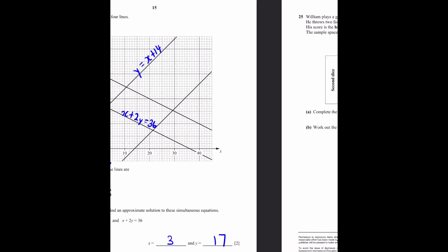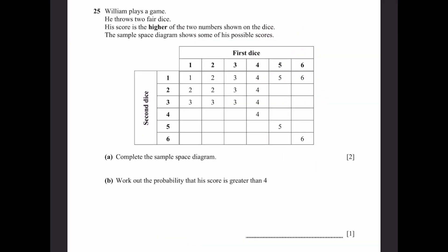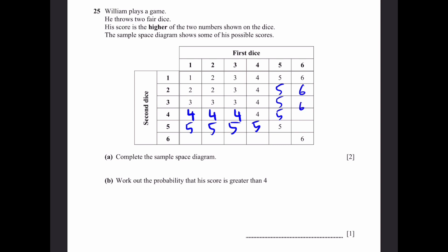Question 25. William plays a game — he throws two fair dice and his score is the higher of the two numbers shown. The sample space diagram shows some possible scores. Part a: complete the sample space diagram. The missing values are: 4 (where die 1 = 4 is greater than die 2 = 1 or 2), then 5s and 6s filling the remaining boxes accordingly.